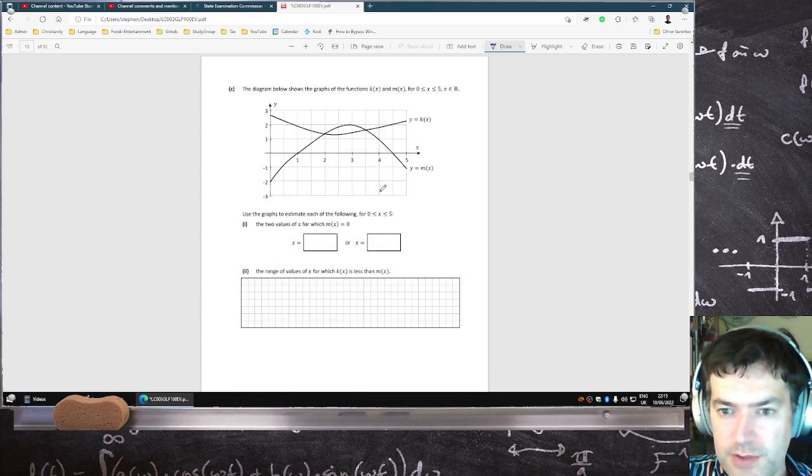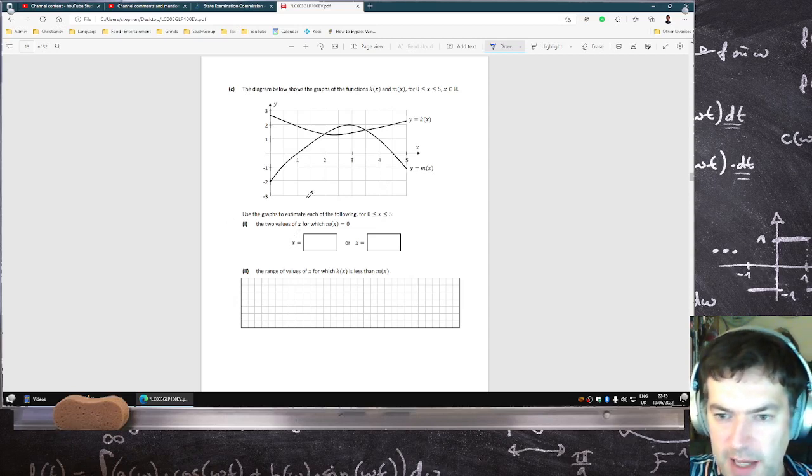The diagram below shows k and m. Use the graph to estimate each of the following. The two values of x for which mx is zero. So that's about here, one and four and a half, roughly.